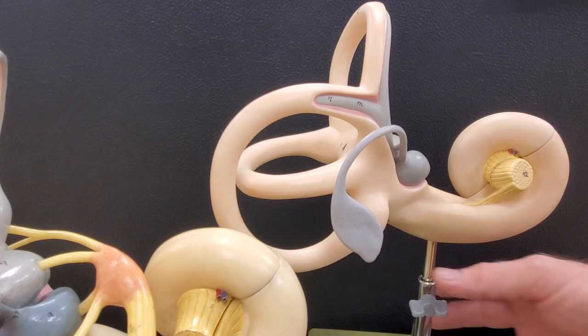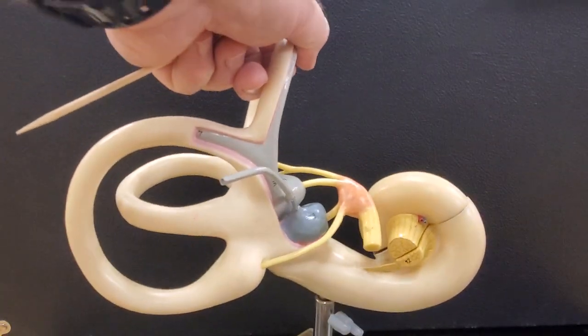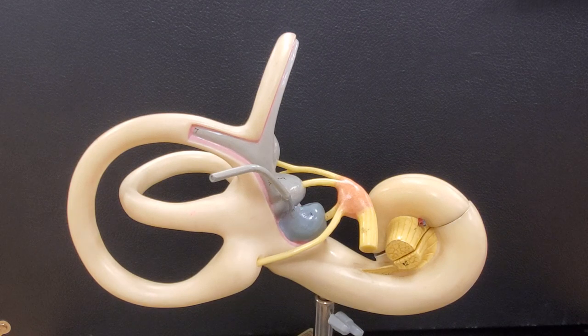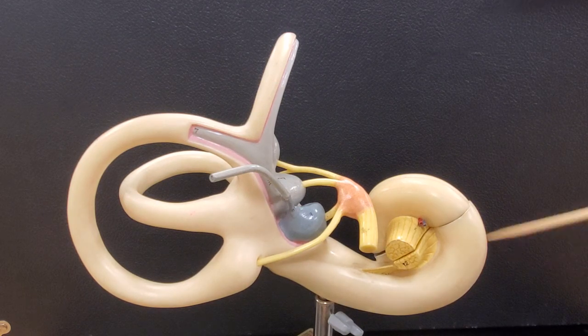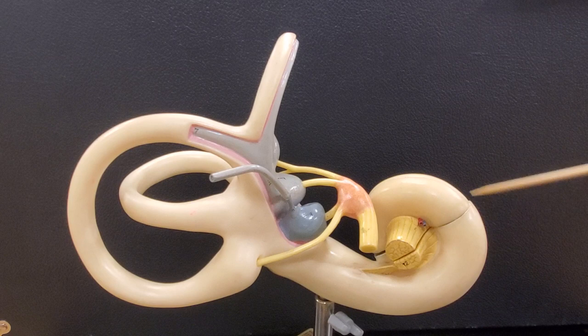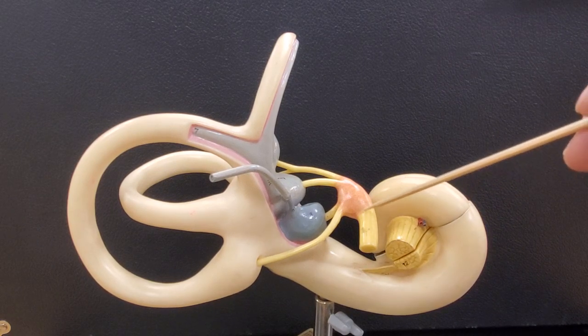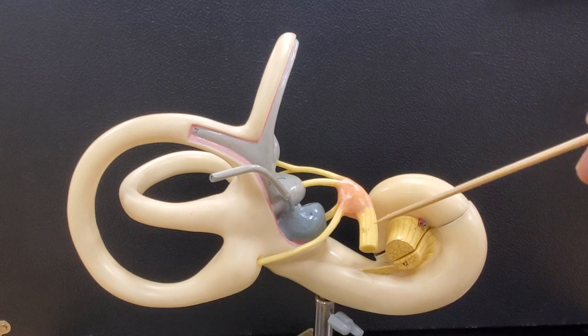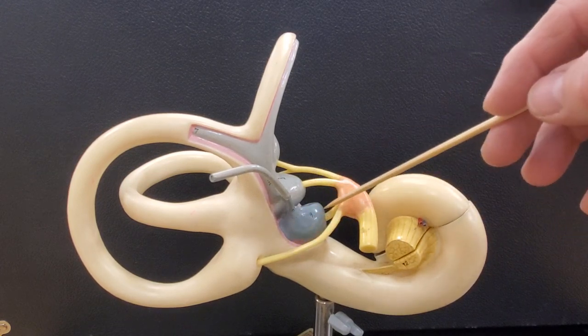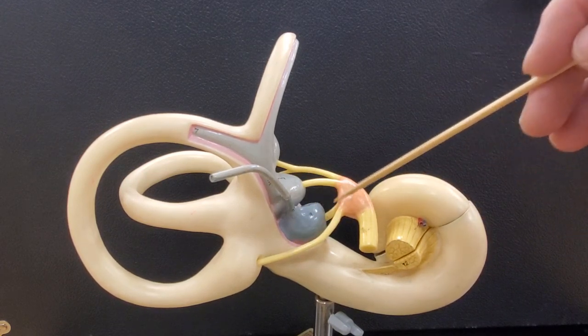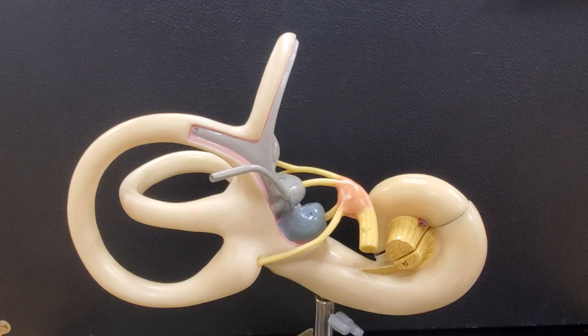Now I'm going to go back to the other model because I really like to look at these structures here. This yellow structure here is called the cochlear nerve because it goes to the cochlea. This yellow structure here would be called the vestibular nerve because it's going to go to the vestibule. It has branches that go to each, the utricle and saccule, and to each of the ampullae.